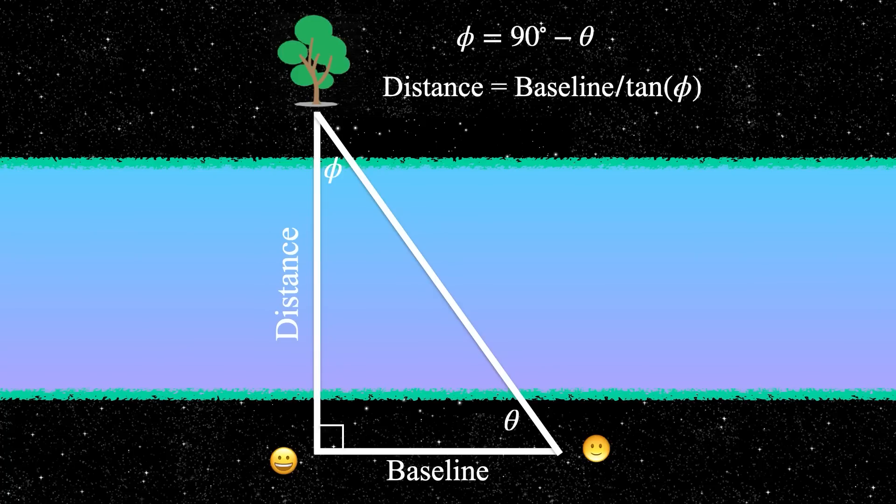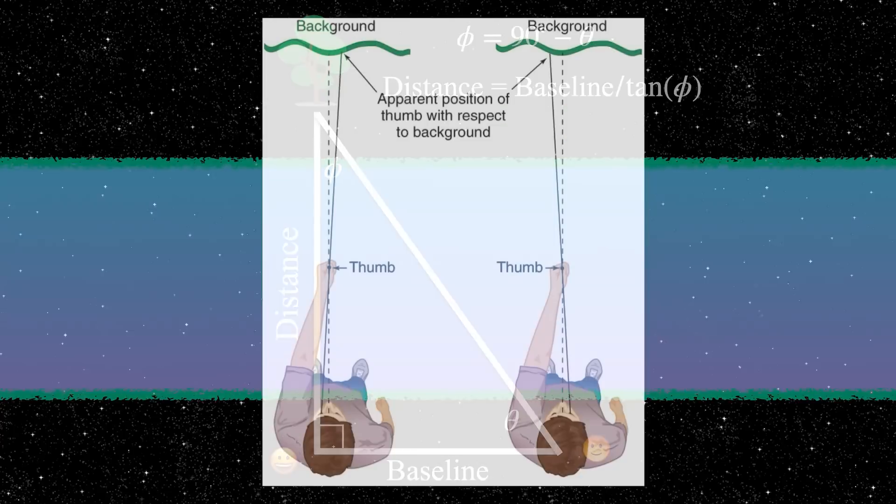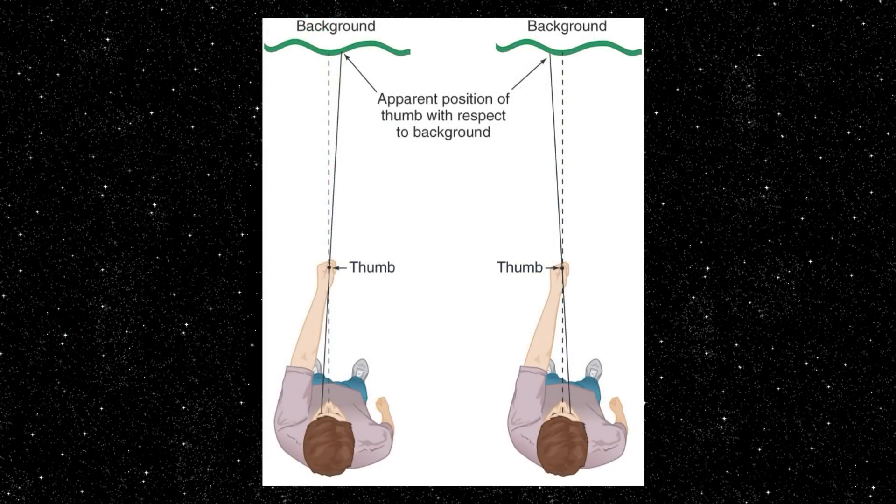When we moved from one place on the baseline to another, the tree looked like it shifted with respect to the background stuff across the river, and that shift we call parallax. You can do this at home: take your thumb at arm's length and blink your eyes left and right. Your thumb apparently jumps left and right. If it's close, the jump is big, but if it's far, the jump is smaller. Parallax is the shift that you see with respect to background things when you change the place from which you're observing.